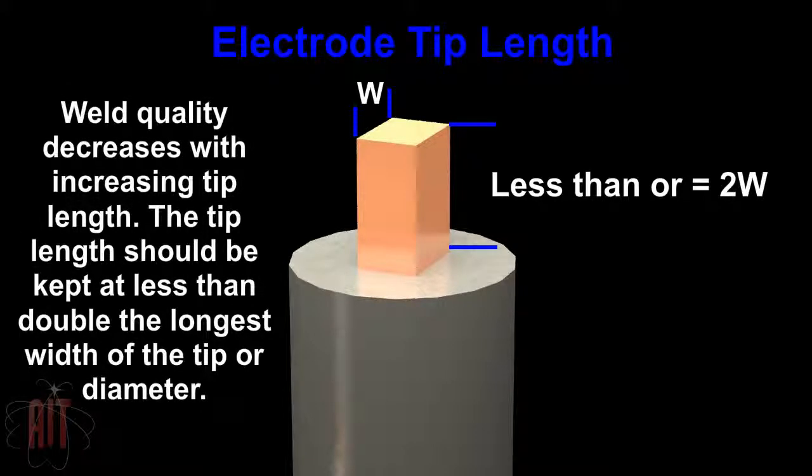Weld quality decreases with increasing tip length. The tip length should be kept at less than double the longest width of the tip or diameter.